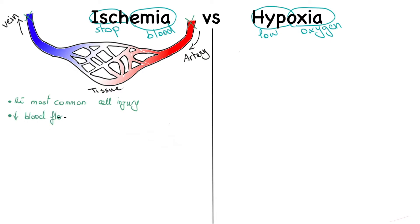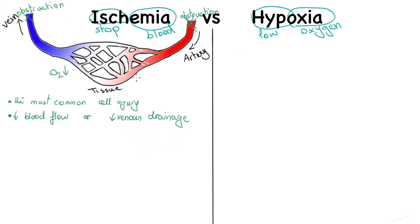Ischemia usually happens due to reduced blood flow or reduced venous drainage. Once blood flow to a tissue is obstructed or doesn't leave the tissue, the problem is not only a lack of oxygen, but also that nutrients aren't getting into the tissue and metabolites are not getting out of the tissue.